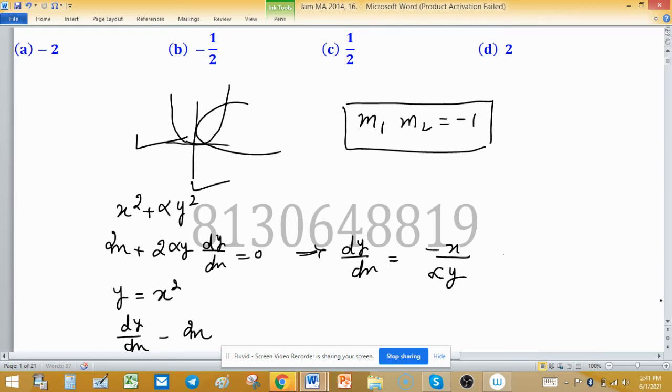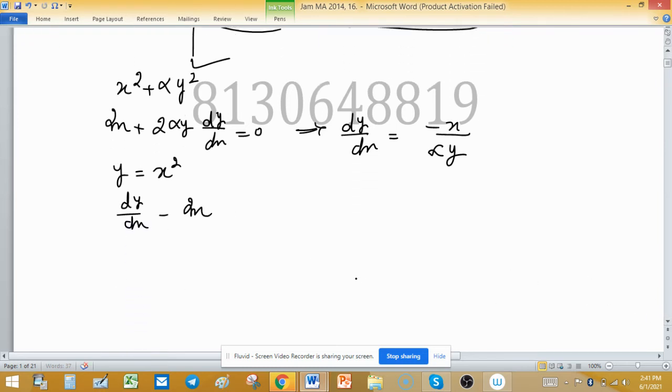We have dy/dx = -x/(αy), and the product with the second one, which is 2x, will equal -1.